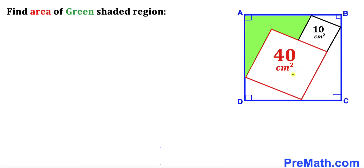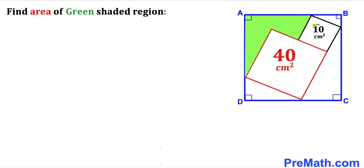Welcome to Pre-Math. In this video we have got two squares — a red square and a black square — fully inscribed in a blue square ABCD, as you can see in this diagram, such that the area of the red square is 40 cm² and the area of the smallest black square is 10 cm². Our task is to calculate the area of the green shaded region.